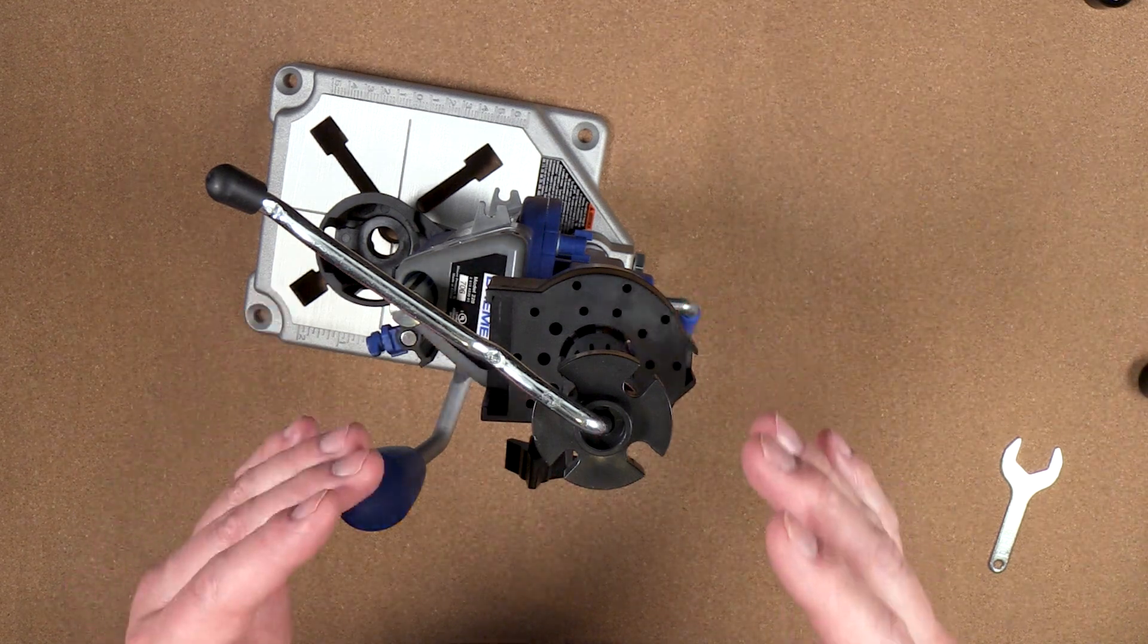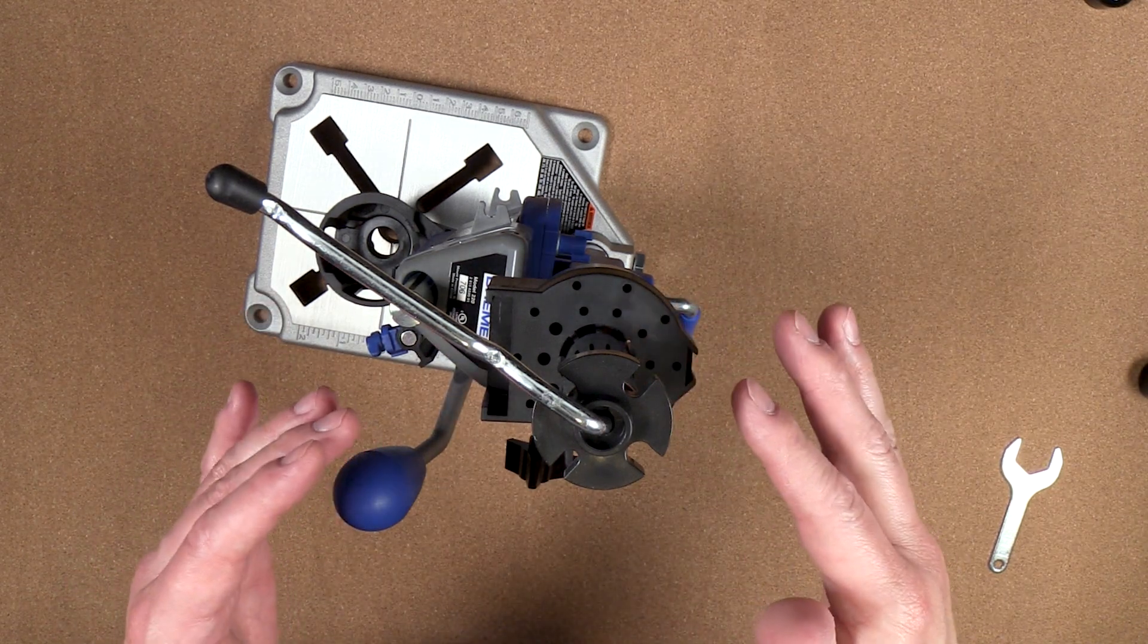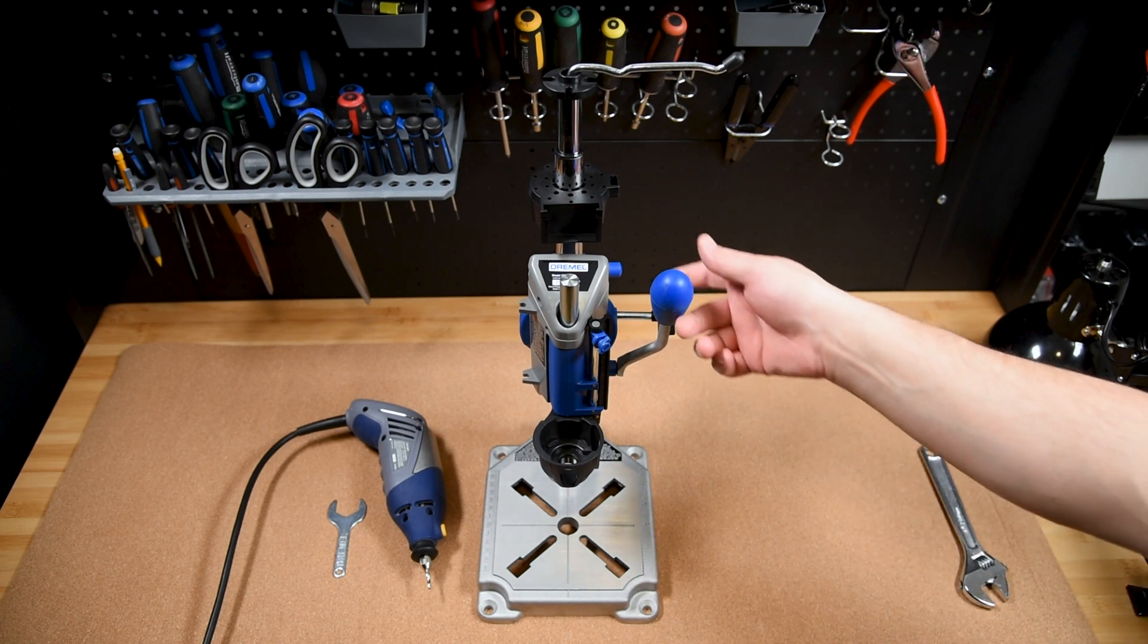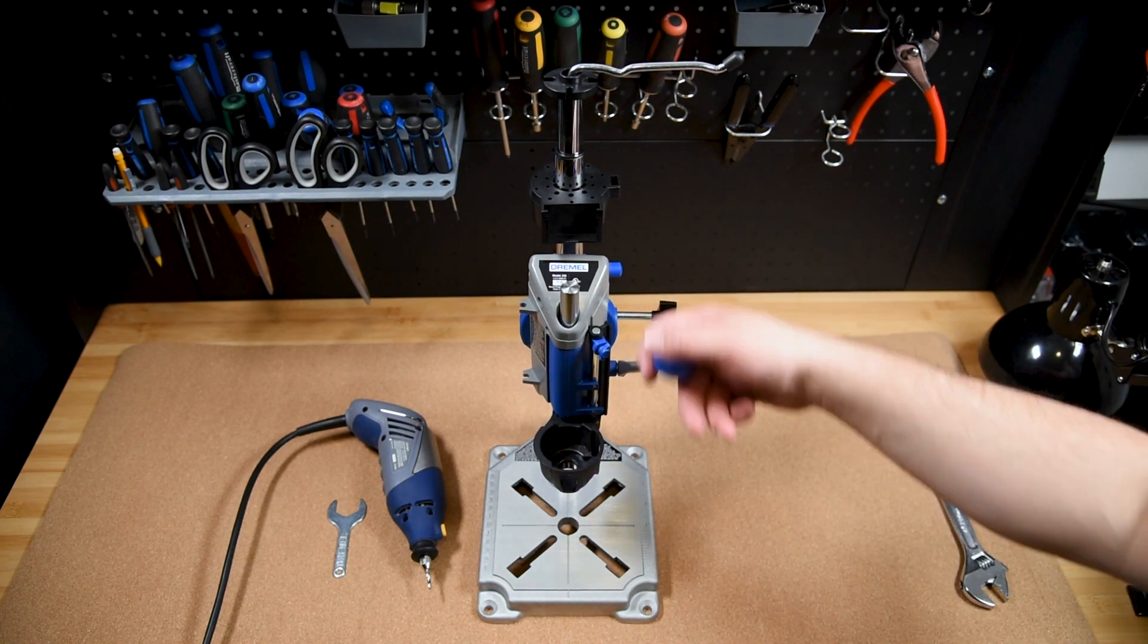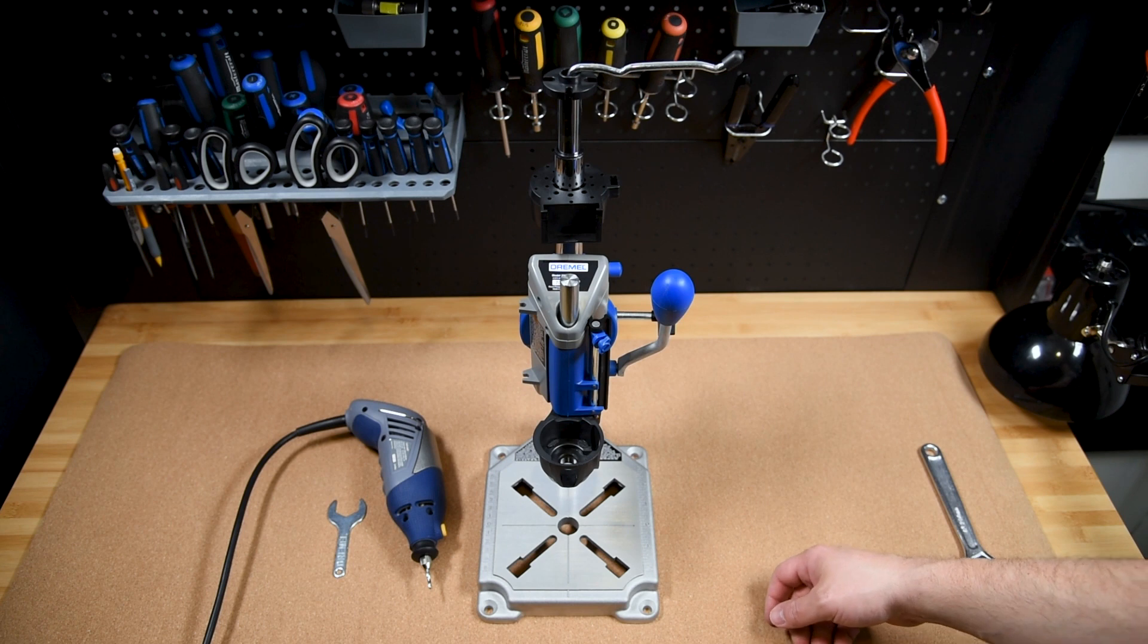That's all there is to the assembly. Now let's look at some of the features. The first and most notable feature of this Dremel workstation is it does work like a mini drill press which we'll test out here in a little bit.